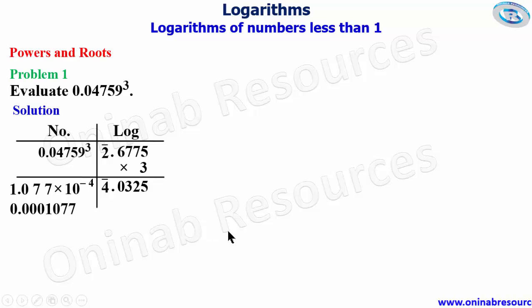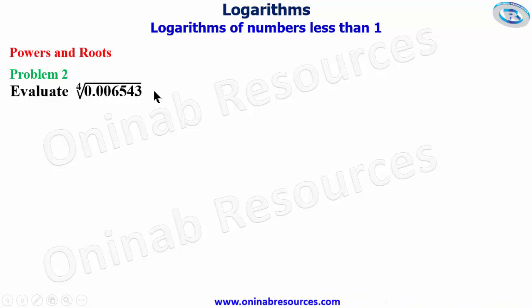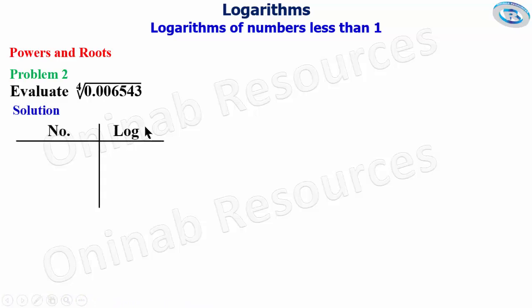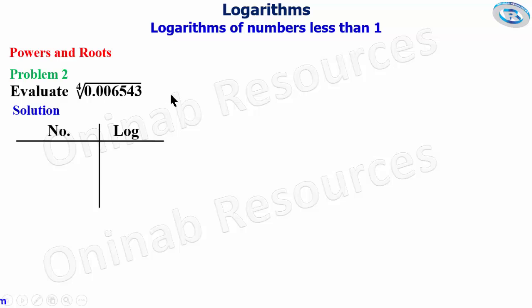That is the end of problem one. We then go to problem two: evaluate the fourth root of 0.006543. Presenting our solution in tabular form with the number column and the logarithm column, we transform the fourth root into index form — so 0.006543 is raised to the power of one over four. We place it in the number column.